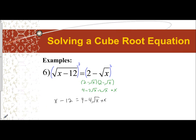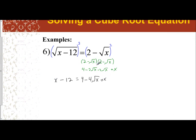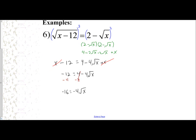Now I have my equation and I notice there is a positive x on the left side and a positive x on the right side — those cancel each other out. The equation I will now be solving is negative 12 equals four minus four square root of x. I subtract four from both sides, giving me negative 16 equals negative four square root of x. Dividing both sides by negative four gives me positive four equals the square root of x.